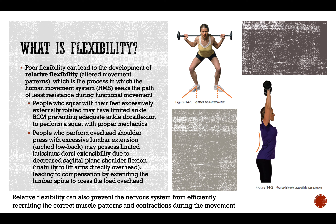Poor flexibility can lead to what we call altered movement patterns, or relative flexibility. Our body tries to work along the path of least resistance. If that normal path is blunted or stopped, the body can't pull in that line of direction, so it has to change and adapt — which is why we end up with poorer movements than we normally would have.